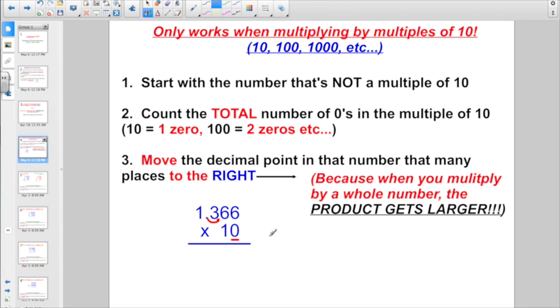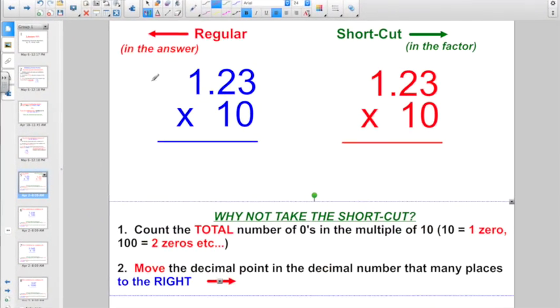That would give me a grand total of 13.66. Because when you multiply by a whole number, the product gets larger. So the trickiest part about this is, do I move my decimal point to the left or do I move it to the right?